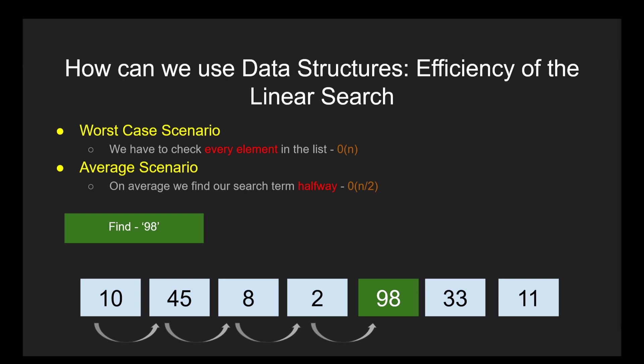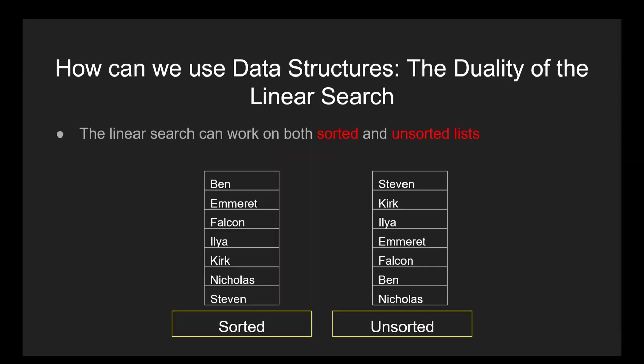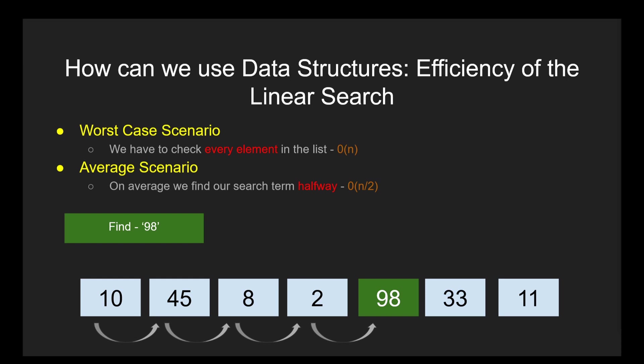On average, however, you are going to find it about halfway through the list. This makes the linear search worst-case scenario O(n), since in the worst possible case it will take the entire length of the array to find the correct value. The linear search on average will return the correct index in O(n/2), or halfway through the list. The linear search is great, however, since it can work with both sorted and unsorted lists. The next search we will cover requires the list to be sorted, which may seem like a drawback, but having a sorted list allows you to use algorithms that are far more efficient than the linear search. So overall, the linear search is a good basic searching platform if you have an unsorted list, but if your list is sorted, there are more efficient options.